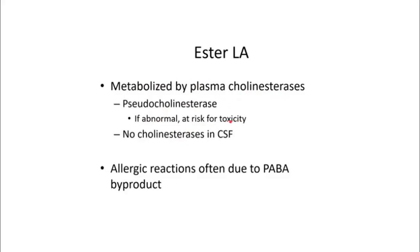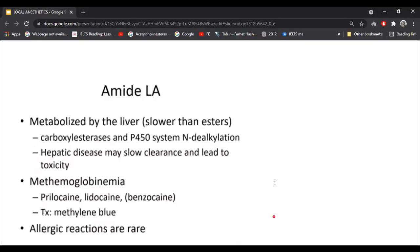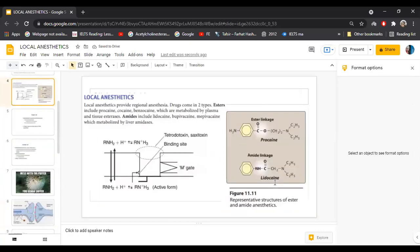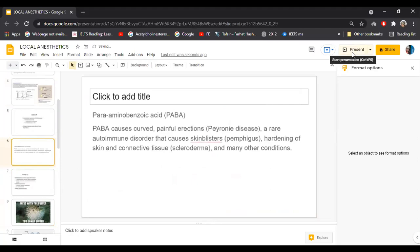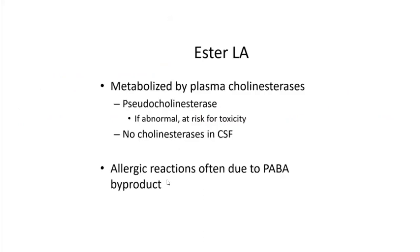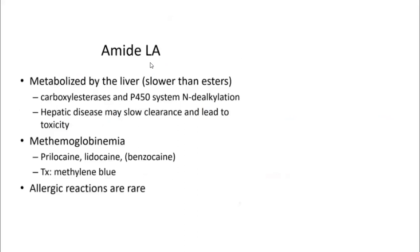Allergic reactions to ester local anesthetics are often due to a byproduct called PABA — para-aminobenzoic acid. PABA can cause painful erections, rare autoimmune disorders, skin blisters, hardening of the skin and connective tissue, and many other conditions. These are the allergic reactions seen after having ester local anesthetics.